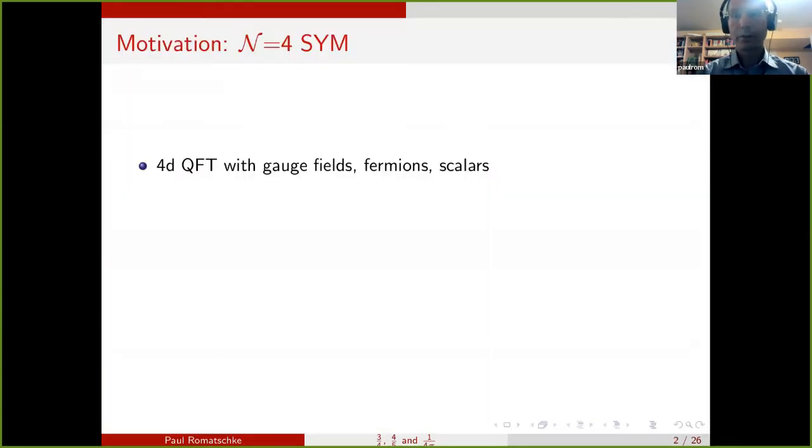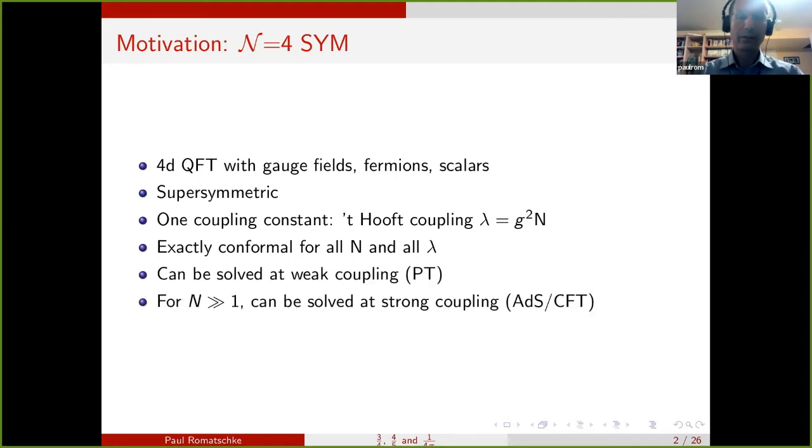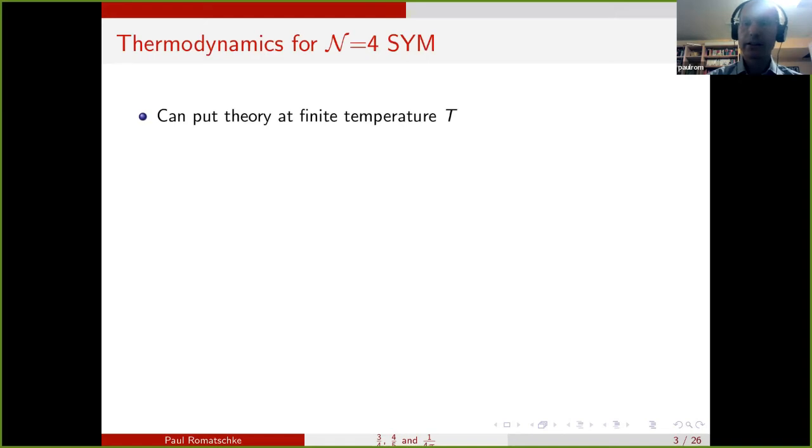Okay, what this is about is basically motivated by the findings from N=4 Super Yang-Mills. Where we have a four dimensional quantum field theory with gauge fields, fermions and scalars, which is supersymmetric and has only one coupling constant which is the 't Hooft coupling. The special thing about N=4 Super Yang-Mills is that it's exactly conformal for all values of lambda, the coupling constant.